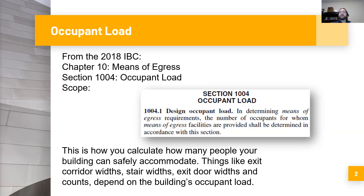Another part of designing a safe means of egress is calculating the occupant load of the building — that means how many people the building can safely serve. Buildings with lots of people, think assembly spaces like theaters, churches, restaurants where you have lots of people gathering, need a lot of exit facilities. Conversely, a building with a very low occupant load, like a warehouse or storage building, doesn't necessarily need as many exits.